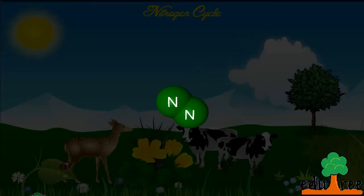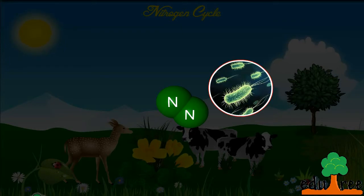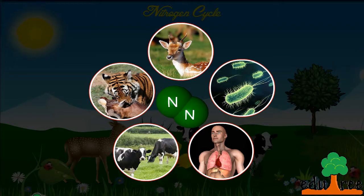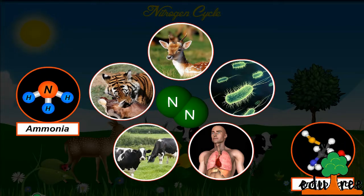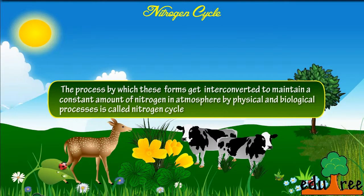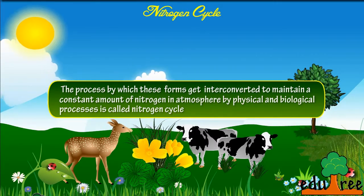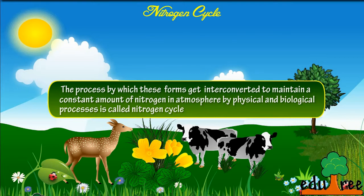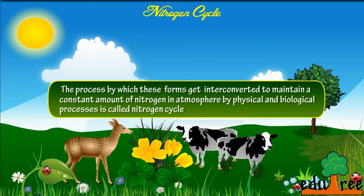Nitrogen is one of the most important constituents for all living organisms, from bacteria to man. Though the atmosphere contains about 78% nitrogen, it cannot be utilized by living organisms unless it is converted into ammonia, amino acids, or nitrates. These compounds, available in the soil, are cycled and recycled in the ecosystem. The process by which these forms get interconverted to maintain a constant amount of nitrogen in the atmosphere by physical and biological processes is called the nitrogen cycle.